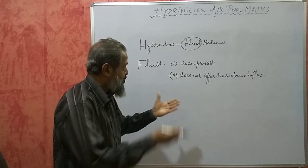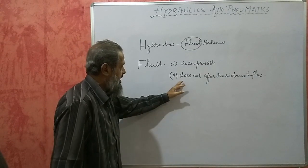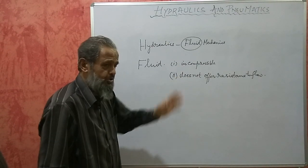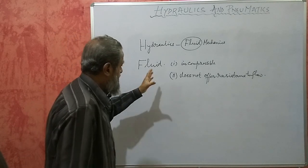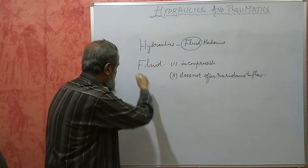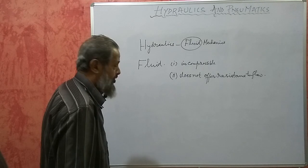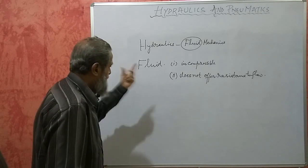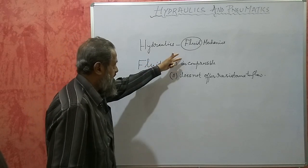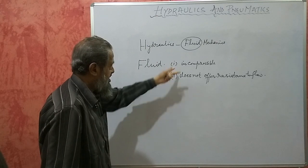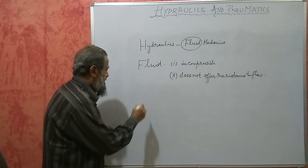Incompressible means it occupies a definite volume which cannot be reduced, and it does not offer any resistance to flow — so it flows freely. A fluid which agrees with this definition exactly is called an ideal fluid. But in practice, we will not get any substance which obeys these two conditions, that is, which is incompressible and doesn't offer any resistance.